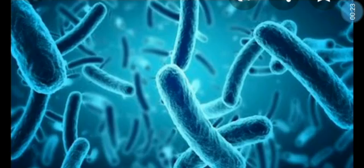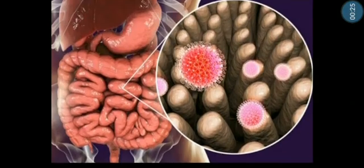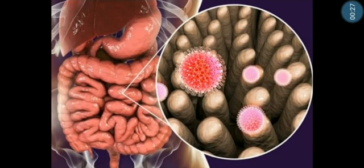Let us first talk about friendly bacteria. According to research, our intestinal tissue and immune system do not develop normally without bacteria. Bacteria serve a metabolic role. For example, through a process of fermentation, they break down indigestible food residue, such as fiber, into useful components the body can assimilate.